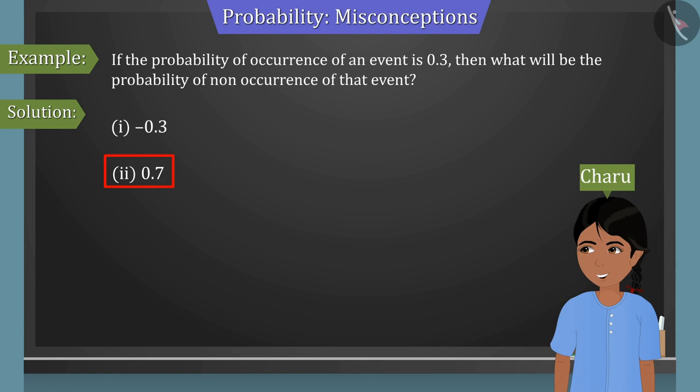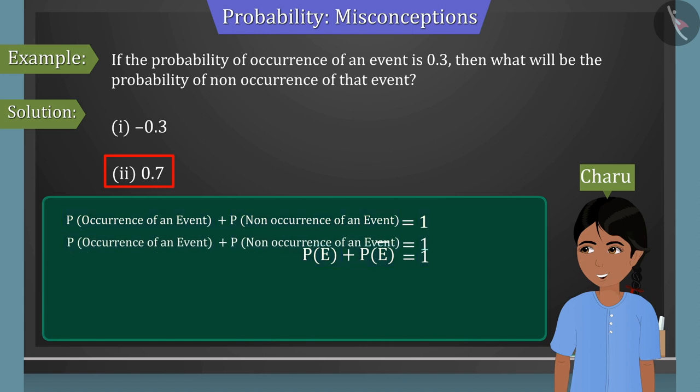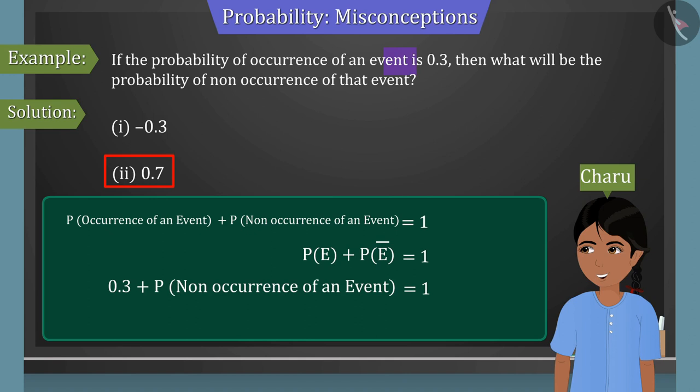Let us now observe how Charu solved this question. According to Charu, the sum of the probabilities of occurrence and non-occurrence of an event is 1. In this question, we are given the probability of occurrence of an event 0.3.